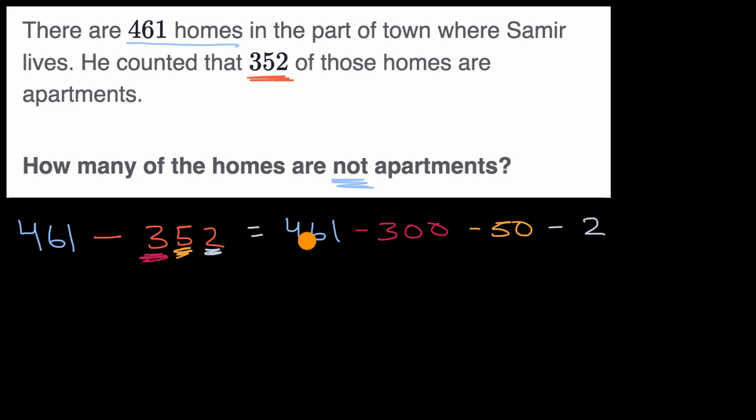And then you might be able to figure out that 461 minus 300, that's going to be, I'm just taking three hundreds from this, so that's going to be 161. And then if I subtract 50 from that, well, what's 61 minus 50? Well, that would be 11. So 161 minus 50 would be 111.